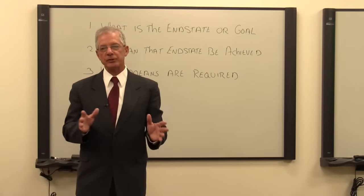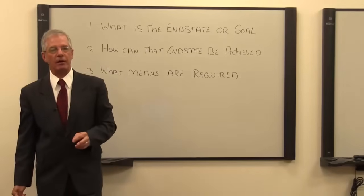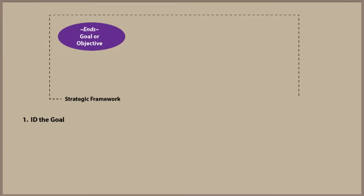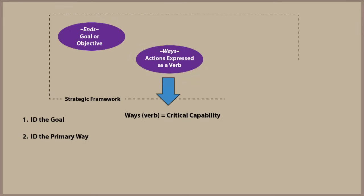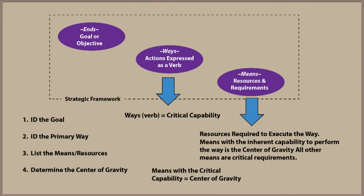It's important for planners to devote sufficient study to these simple yet critical questions. Fortunately, operational design, along with the intelligence estimate of the adversary, will help answer these questions. The first step is to identify the end state or goal. Second, list the ways, with an effort to identify the primary way that achieves the end state — it's useful to think of the ways as a verb, because this helps identify the critical capability. Third, list the means required to execute and support the chosen way. The last step is to select from the list of means that item which inherently possesses the critical capability to execute the chosen way — that item is the center of gravity.